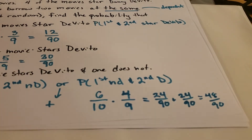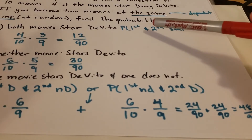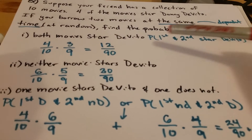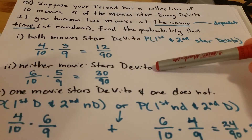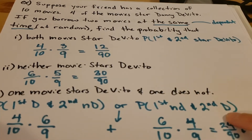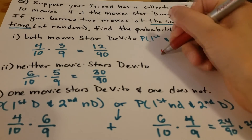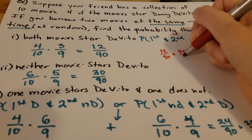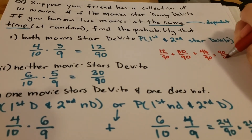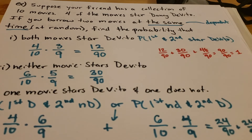Something interesting: if we go back and think about everything that could possibly happen, this covers all possible outcomes in our sample space. We could get two DeVito movies, both non-DeVito movies, him in the first but not the second, or not in the first but in the second — those are all four things that could happen. If we add up all our answers — 12 over 90, plus 30 over 90, plus 48 over 90 — this adds up to 90 over 90, or one. So one of these three outcomes is guaranteed to happen when we take two movies out.